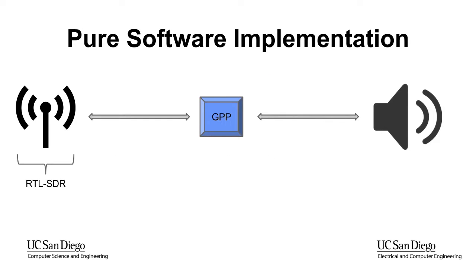This is the chain of a pure software implementation of a radio. There is an input source, then a GPP — a general-purpose processor — which takes the input samples, does the processing in software, and outputs it to a sink.